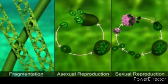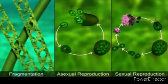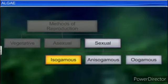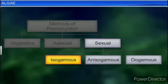Vegetative reproduction usually takes place by fragmentation or by formation of different types of spores. Asexual reproduction is by flagellated zoospores produced in zoosporangia. Sexual reproduction shows considerable variation in the type and formation of gamete cells. It may be isogamous with morphologically similar gametes, anisogamous with morphologically dissimilar gametes, or oogamous where the male gametes are smaller and motile.